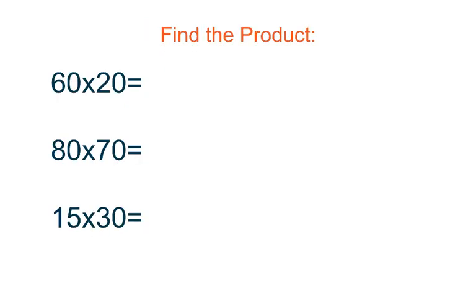The first thing I want you to do is find the product to these three multiplication problems. Go ahead and solve for 60 times 20, 80 times 70, and 15 times 30. Don't forget your zeros.